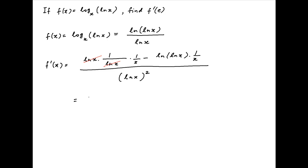This can be written as 1 upon x times in brackets 1 minus ln(ln(x)) divided by ln(x) whole square.